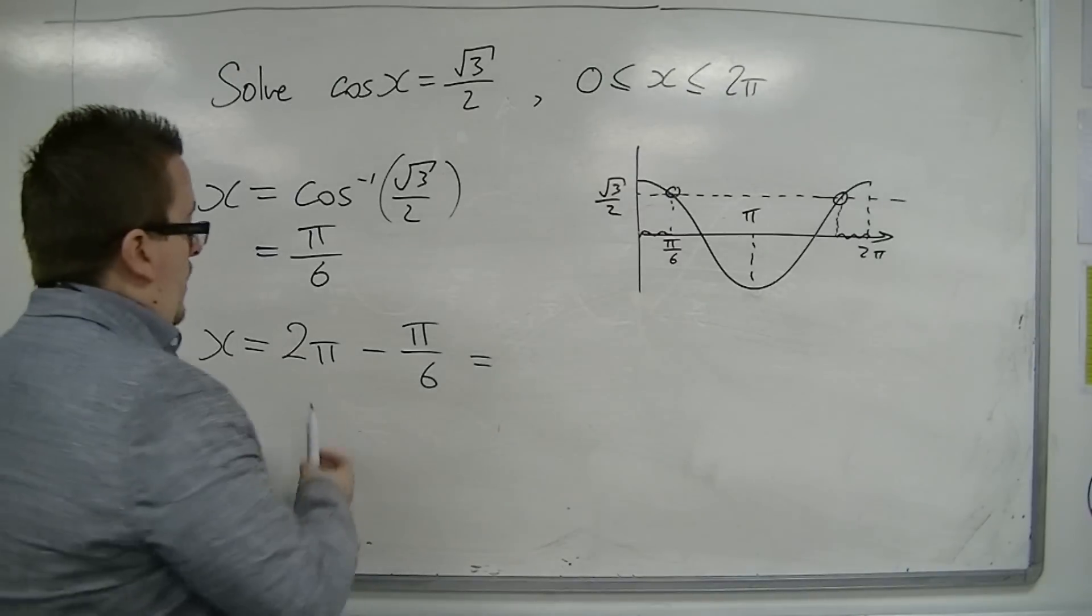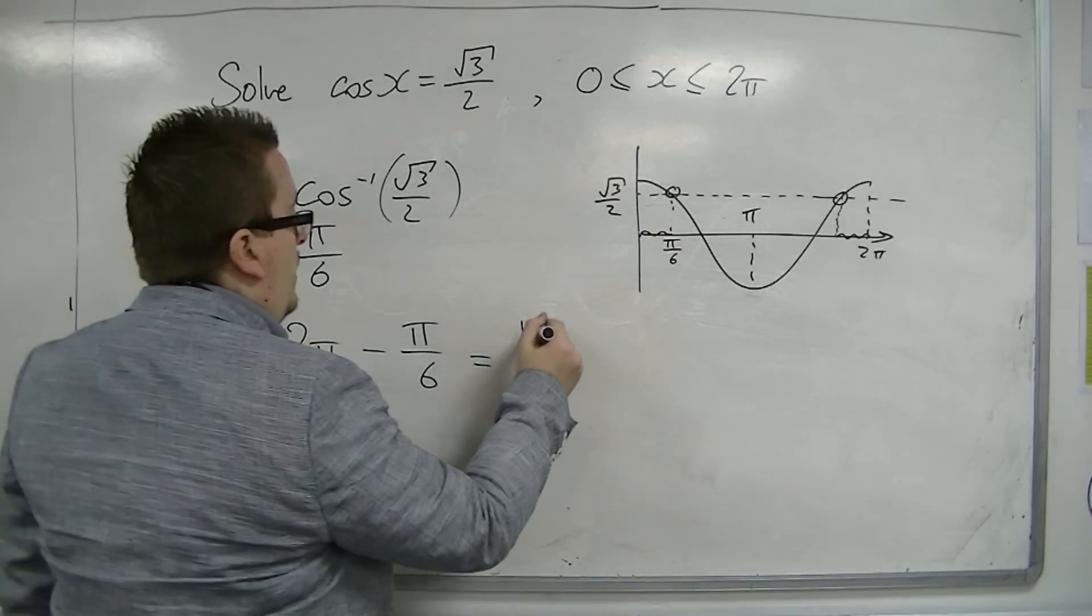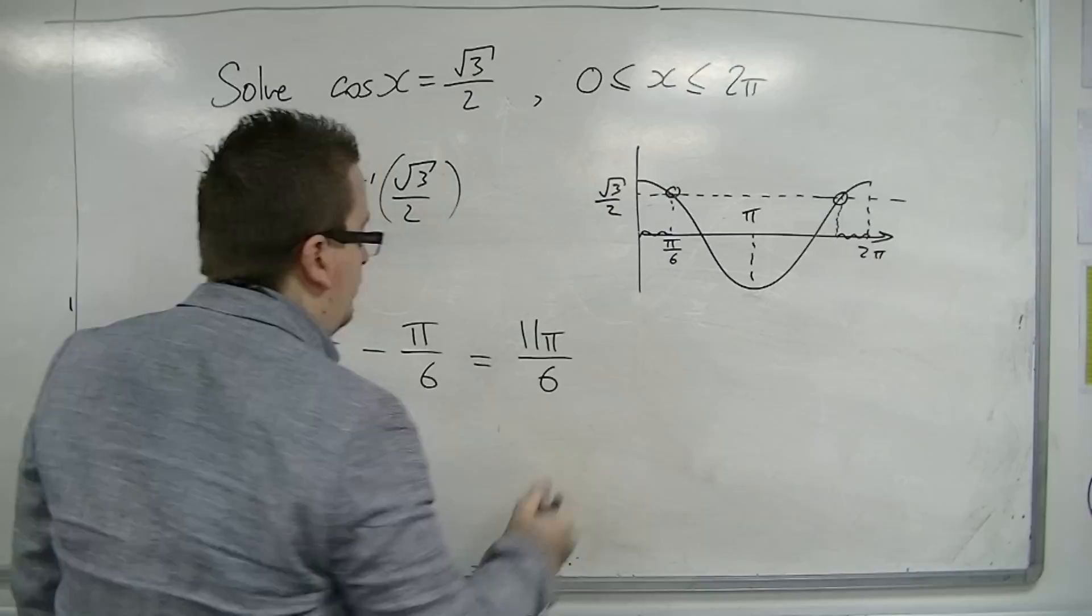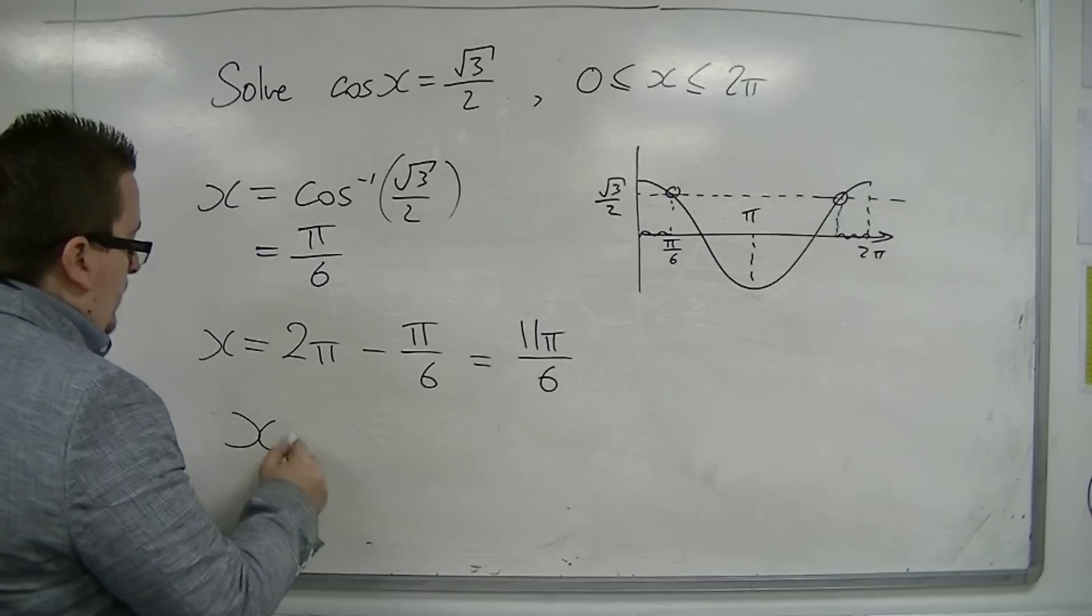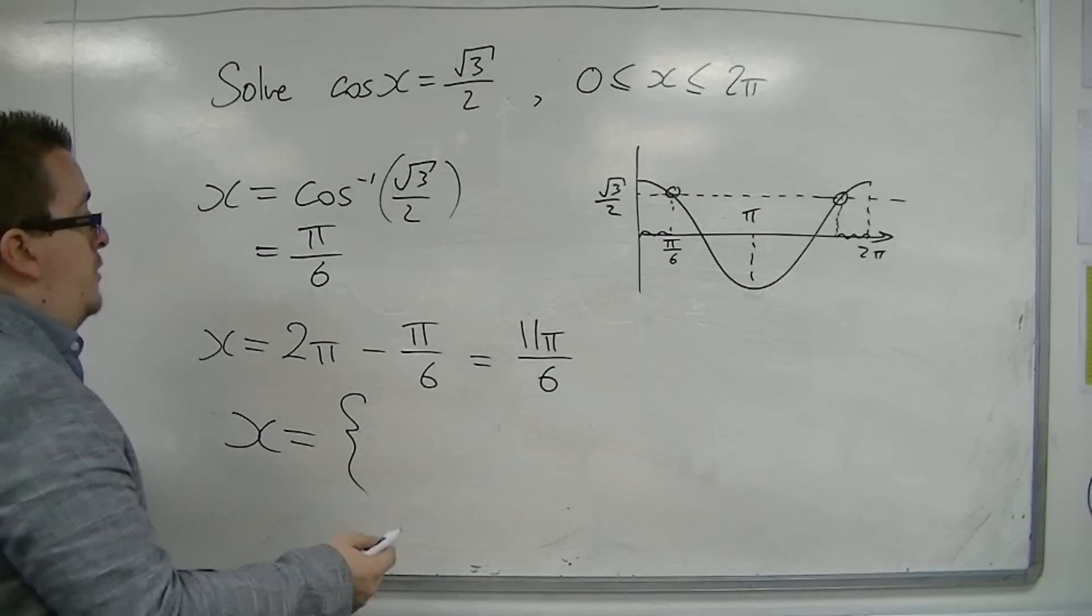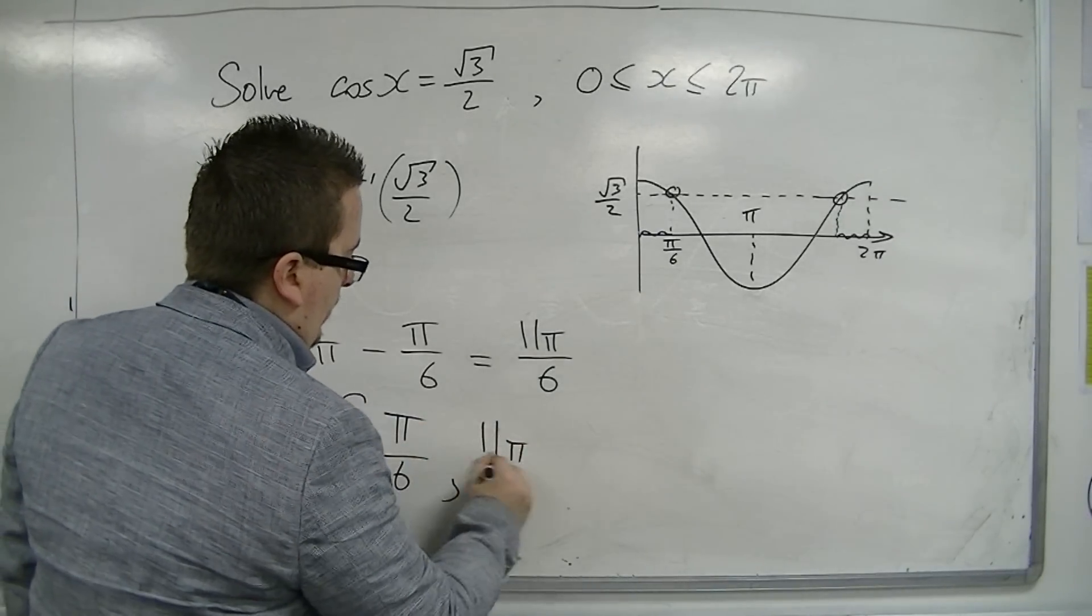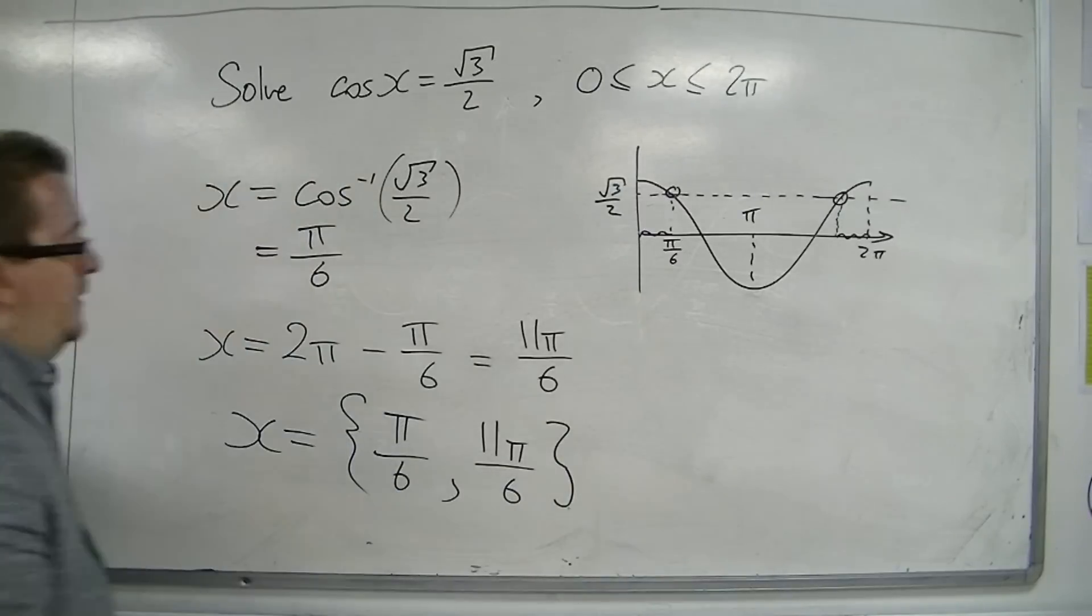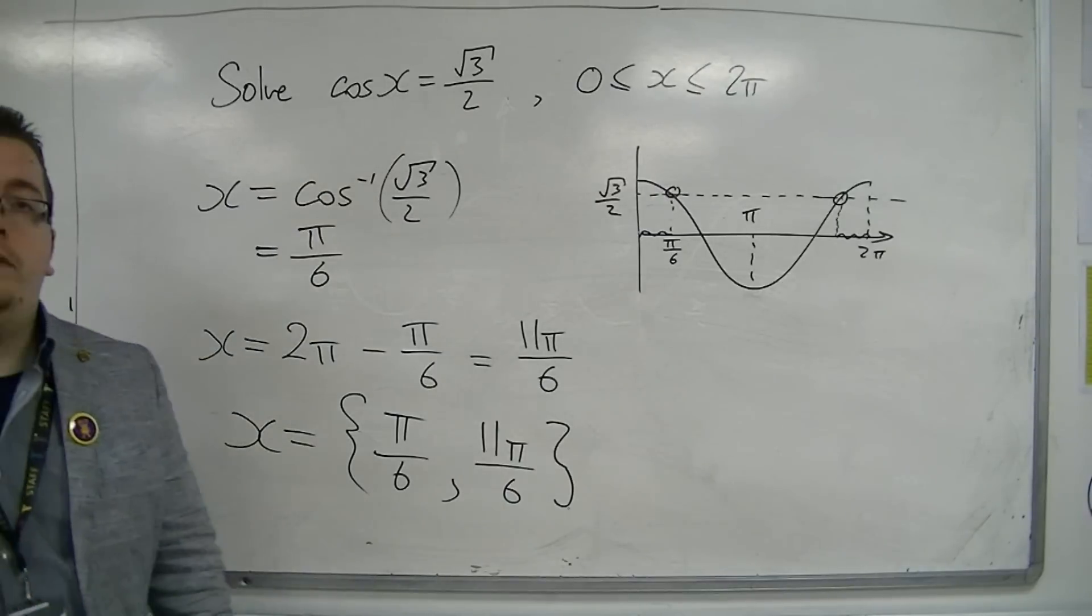So, that is, well, that's 12π over 6, so this is 11π over 6. Okay? So, x, the two solutions can be written inside nice curly brackets, like so. And that is how we can solve that cosine equation.